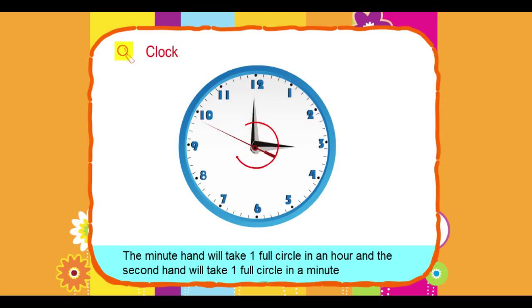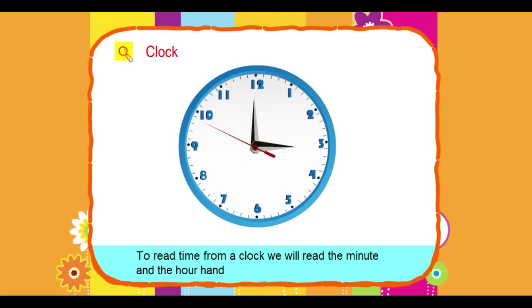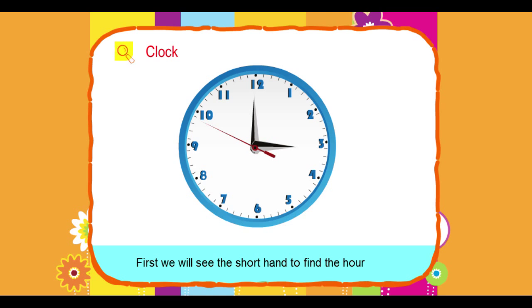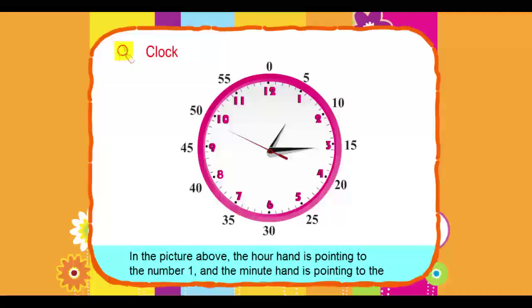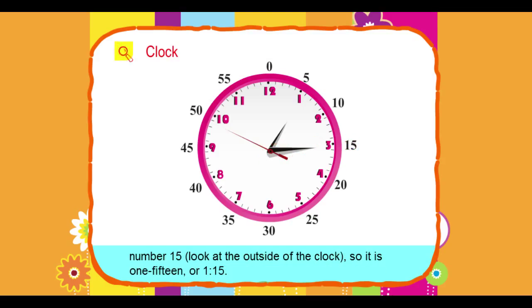in a minute. To read time from a clock, we will read the minute and the hour hand. First, we will see the short hand to find the hour. In the picture above, the hour hand is pointing to number 1 and the minute hand is pointing to the number 15. Look at the outside of the clock. So it is 1:15.